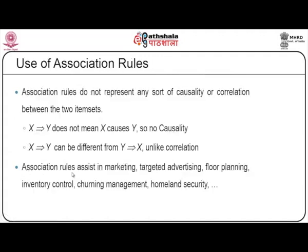An association rule does not represent causality or correlation between two item sets — X implies Y does not mean X causes Y. Also, X implies Y can be different from Y implies X. For example, after purchasing bread, people tend to buy milk, but the reverse may not be true. We measure the percentage of occurrence using interestingness measures. Association rules assist in applications like marketing, targeted advertising, floor planning, inventory control, churning management and homeland security.